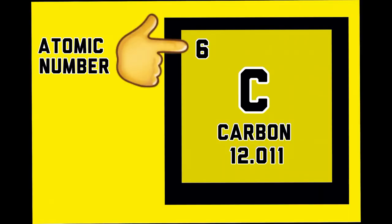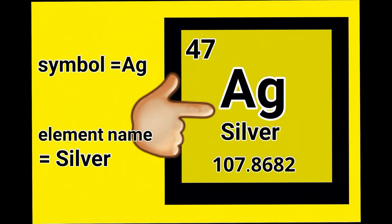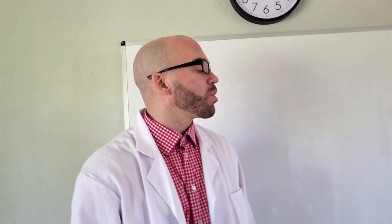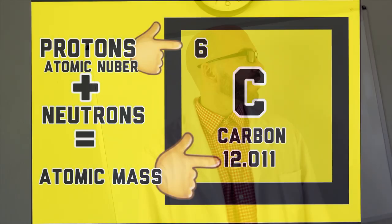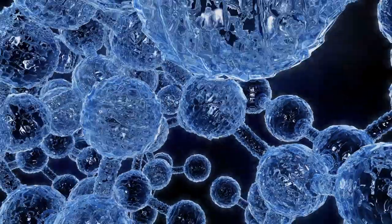Atomic number at the top of each square, representing the number of protons that are there. Next we got the symbol and the name of the element. Don't get confused, sometimes the letters won't seem relevant. I know the symbol, what's the number under that? Just add the protons and the neutrons and you'll get atomic mass.